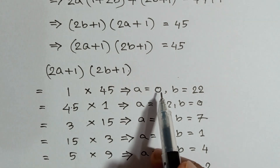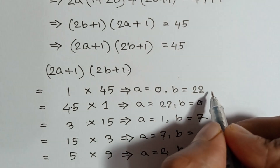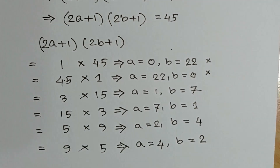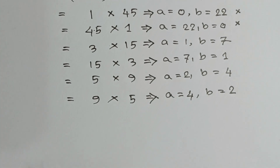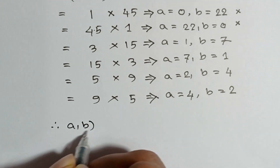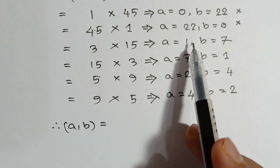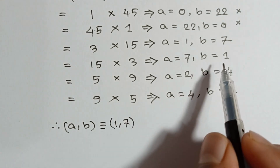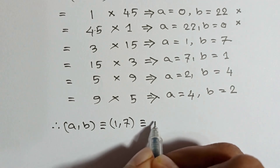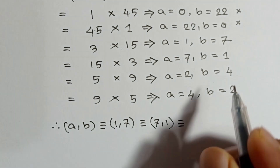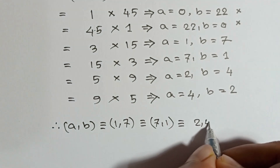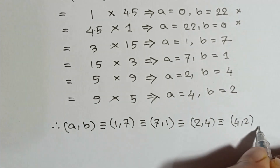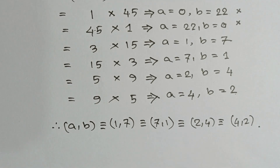Since a and b are positive integers, zero is not a positive integer, so the cases giving a = 0 or b = 0 are not valid solutions. We can conclude that the solutions for (a, b) are: (1, 7), (7, 1), (2, 4), and (4, 2). Thanks for watching.